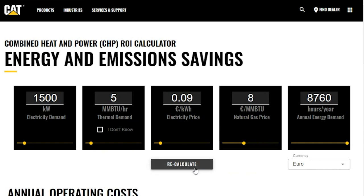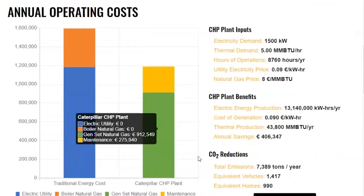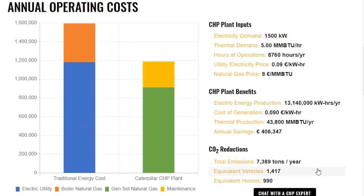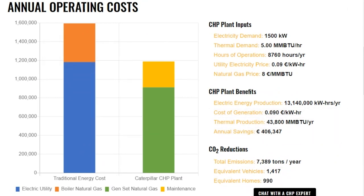So if I click Calculate and scroll down on the page, we have an overview of our annual operating cost. This table on your left provides a comparison for traditional energy costs using electric utility with a boiler for your natural gas that provides your heat for your site — comparing that to a Caterpillar natural gas genset being used in the CHP application for your heat, as well as the maintenance costs associated with that CHP genset.